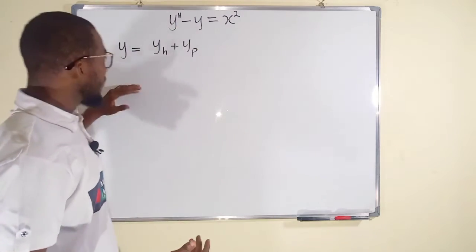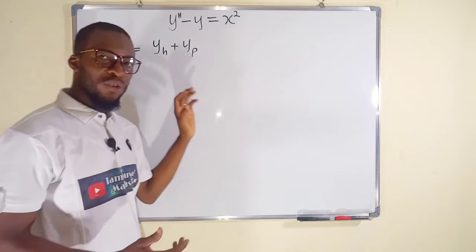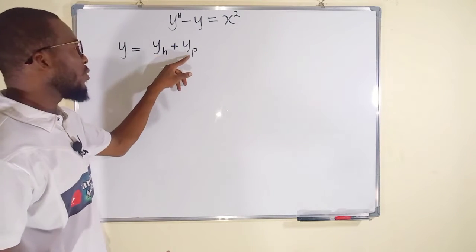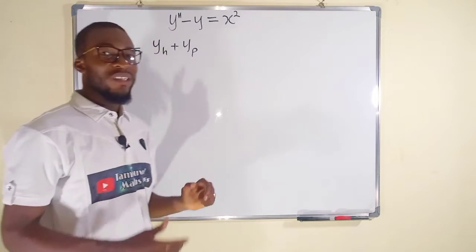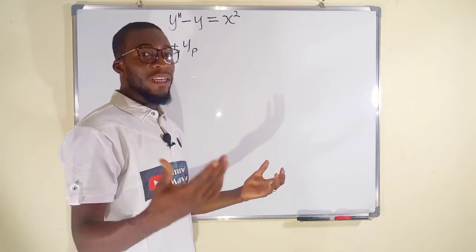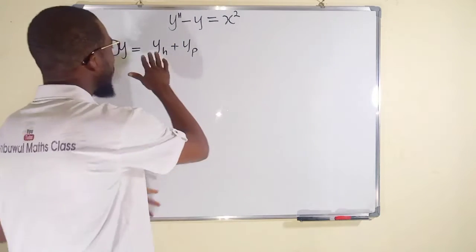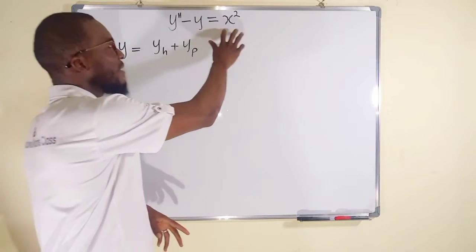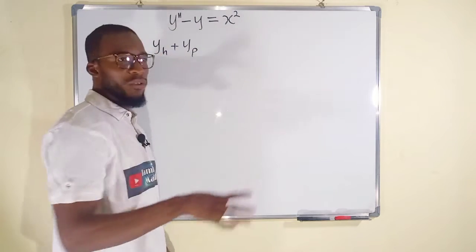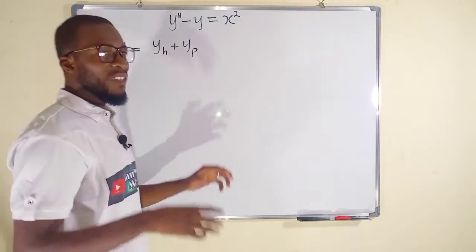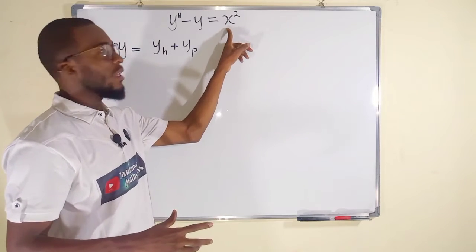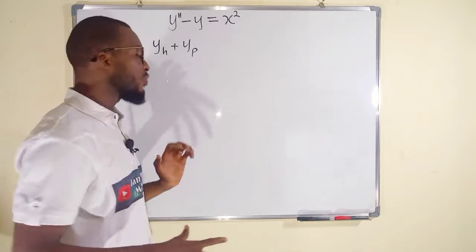The general solution is of this form: y, which is a function of x, equal to y sub h plus y sub p. y sub h is the general solution to the homogeneous second order linear differential equation, and we can only find the solution to this by setting the right hand side, which is x squared, to be equal to zero. y sub p is the particular solution, which depends on the nature of the right hand side, which is a quadratic function.